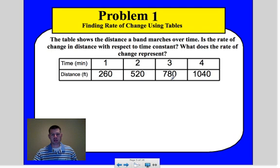Problem number one: find the rate of change from a table. The table shows the distance a band marches over time. Is the rate of change in distance with respect to time constant? We're asking, is the rate of change constant from each point? What we're looking at is these coordinates. We're changing between one and one here and here. What we're finding is our change in y over our change in x. As you look through, we're increasing one, increasing one, increasing one. So our change in x, which is our time in this case, is one.